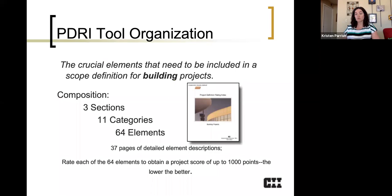How are these tools organized? We're really only going to look at the building project for this case, because in the FHC, that's sort of what people are doing. So what we have found is that we've listed the critical elements that need to be included in the scope definition for building projects. So this comprises three separate sections, the basis of project decision, the basis of project design, and the execution approach, 11 categories, which you'll see detailed in future slides, and 64 elements. This comprises 37 pages of detailed element descriptions, and you rate these elements to obtain a project score. Again, as I mentioned previously, this could be as high as 1,000, and the lower the score, the better.